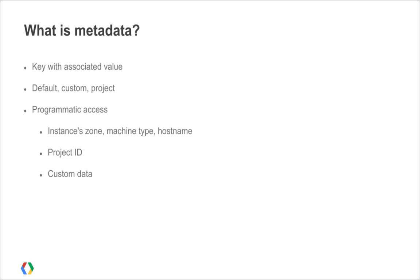Using metadata, an instance can programmatically get information about itself, such as its zone, machine type, or hostname, information about the owning project such as the project ID, or custom data provided by you, the developer. For example, if you're working with a Hadoop-like cluster, you can use custom metadata to specify which node is the master and which nodes are the workers.